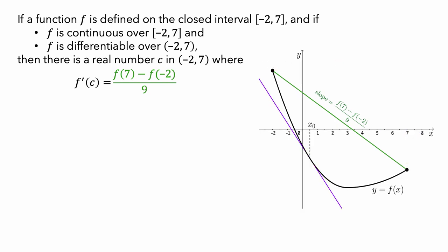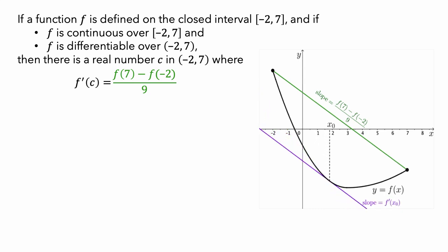Let's imagine a tangent line at x equals x0. The slope of this tangent line would be f prime of x0. For this value of x0, the tangent line does not appear to be parallel to the secant line, so the slope of the tangent line would not be equal to the slope of the secant line. Let's increase the value of x0 and see what happens to the slope of the tangent. For this particular value of x0, the tangent line now appears to be parallel to the secant line, so the instantaneous rate of change equals the average rate of change. We don't know exactly what the value of c is — we'd need additional information — but the mean value theorem tells us that some such value exists.